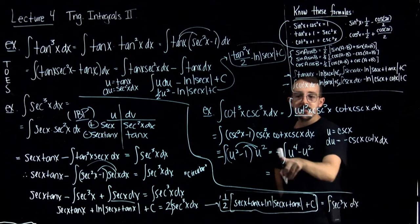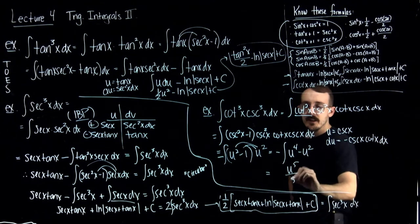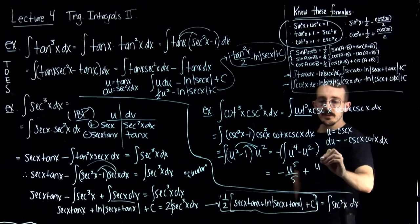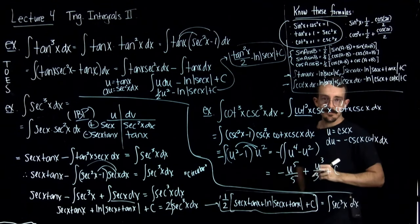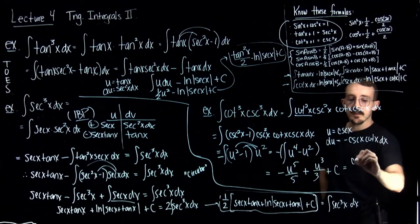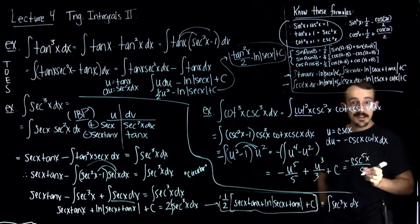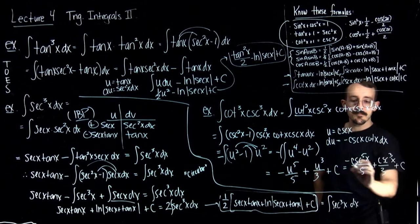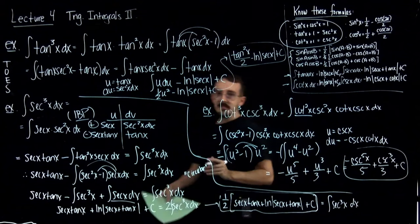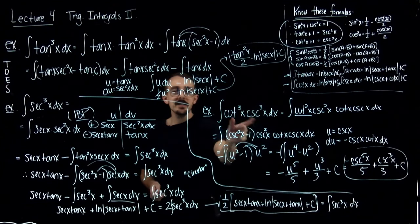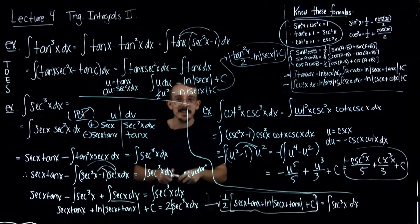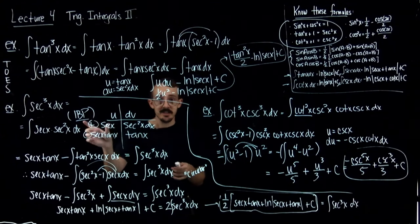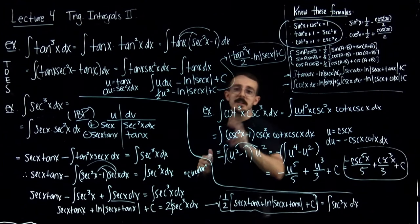Integrating and distributing the negative sign, I get: negative u to the fifth over 5 plus u to the third over 3, plus C. Plugging cosecant back in for u: the final answer is negative cosecant to the fifth over 5 plus cosecant to the third over 3, plus C. The cotangent cosecant integrals use exactly the same strategies as the secant tangent ones — once you're comfortable with secant tangent, those rules transfer directly.